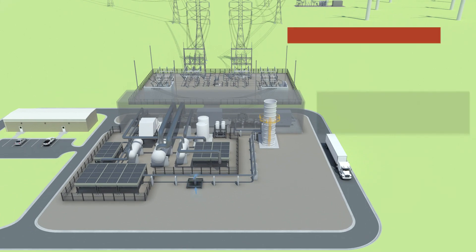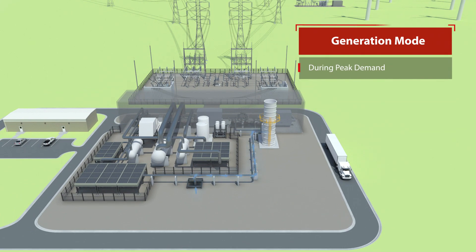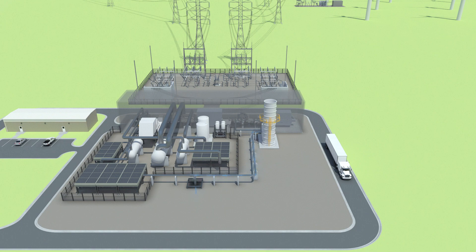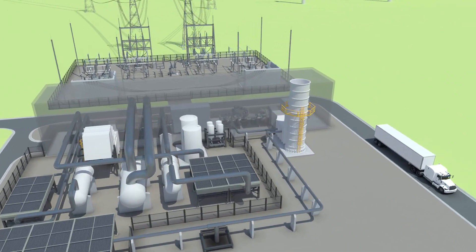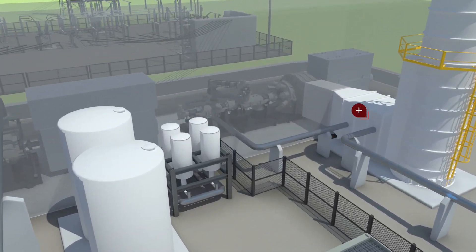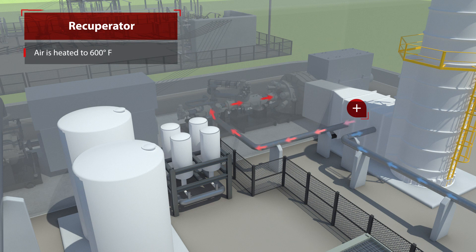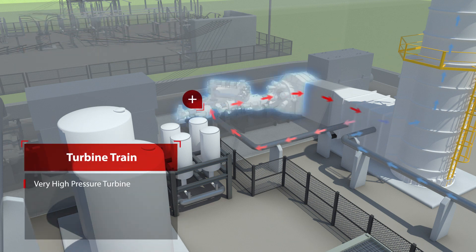When consumer demand is high, the plant then goes into generation mode. The compressed air is released from the cavern into a heat exchanger called a recuperator, where it's heated to 600 degrees Fahrenheit. Next, the hot air is expanded in a high-pressure turbine, where natural gas-fired combustors heat the air to approximately 1,000 degrees Fahrenheit.